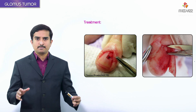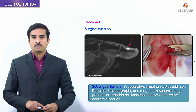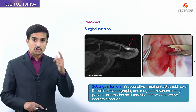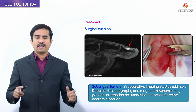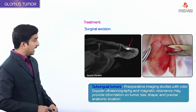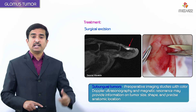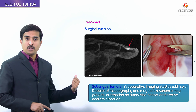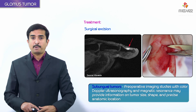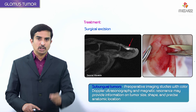The treatment of choice is surgical excision, especially for sub-ungual tumors. Preoperative imaging with color Doppler ultrasonography and MRI can provide information on tumor size, shape, and precise anatomical location. On the MRI shown here, we can clearly identify nail dystrophy caused by the sub-ungual glomus tumor, with a red sub-ungual patch indicating the tumor's location.